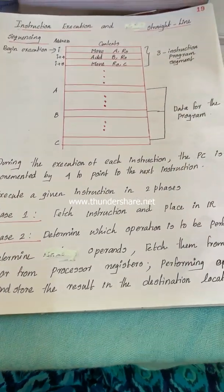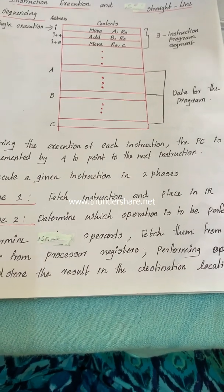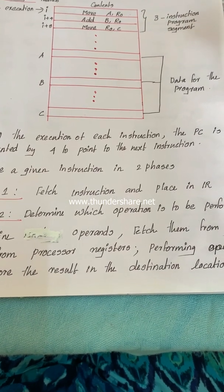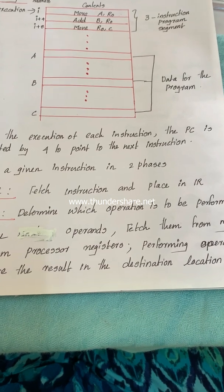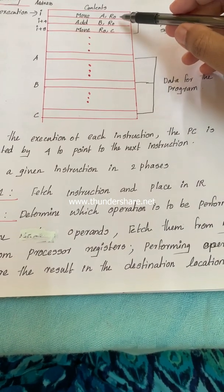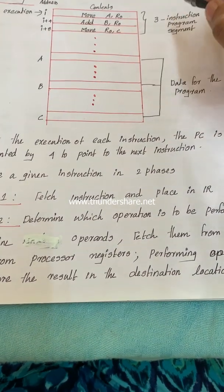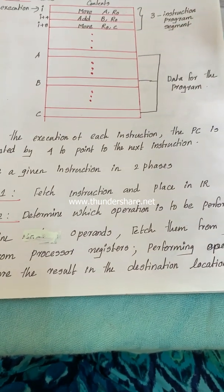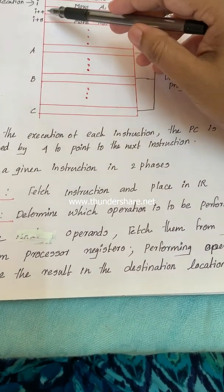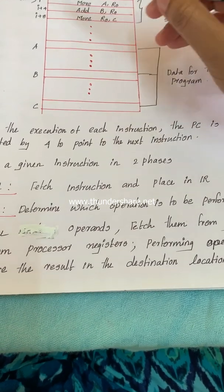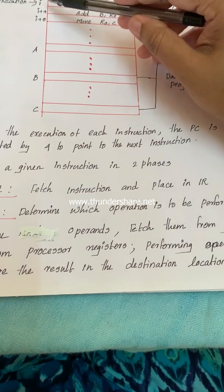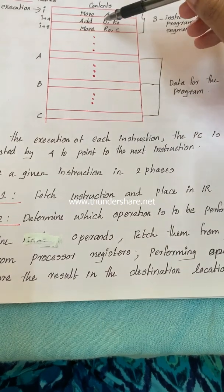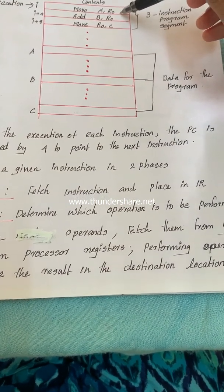The processor starts decoding to identify the operands and the operation to perform. Suppose the operand indicates a memory location — the processor fetches the value from that memory location and from the appropriate register, then performs the operation. During execution of this first instruction, the program counter is automatically incremented from I to point to I plus 4.